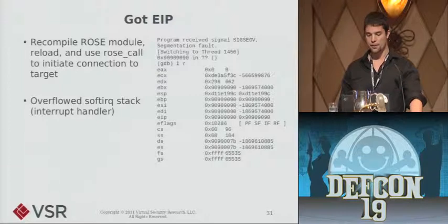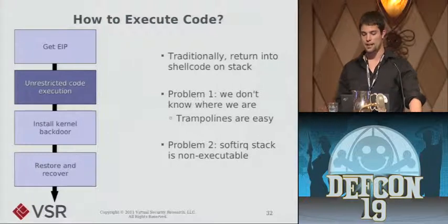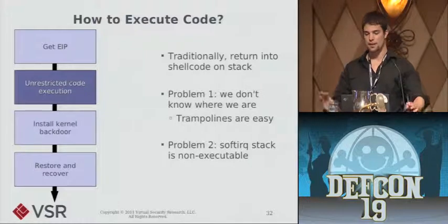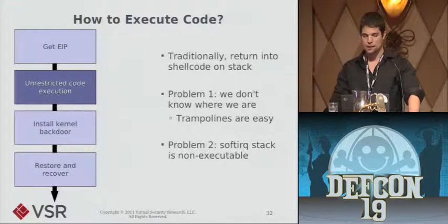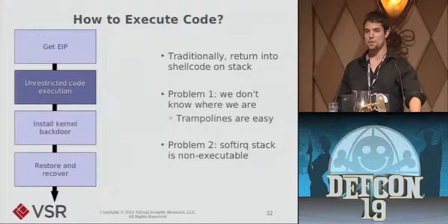So now we control the instruction pointer. As most people who've written serious exploits know, getting control of the instruction pointer and actually executing code can be separated by a lot of work. Traditionally if it were like 1995, we would just return into shellcode stored in our buffer copied onto the stack and we'd be running code. The first problem is we don't actually know where the soft IRQ stack lives in memory, because it's allocated at runtime and will be different on each boot.